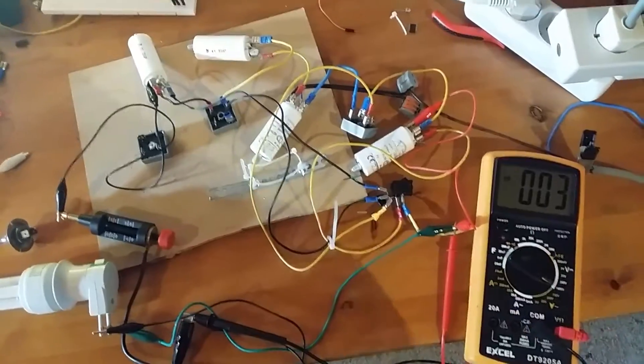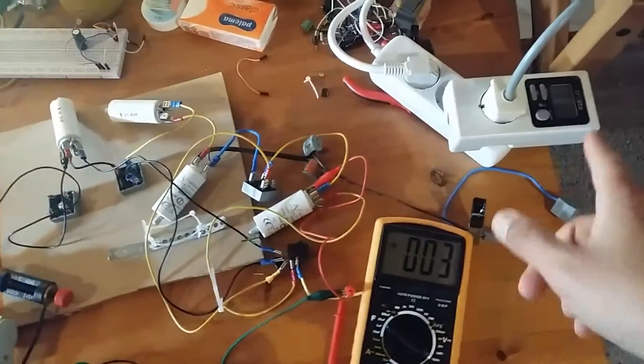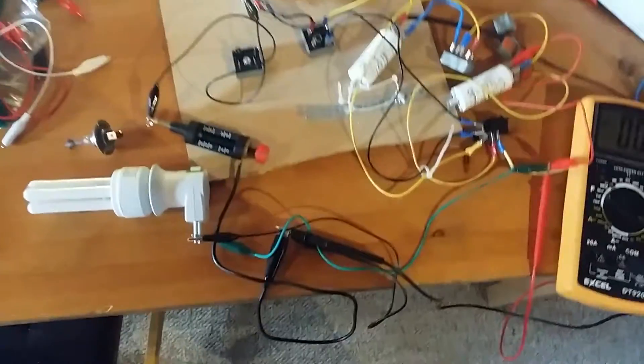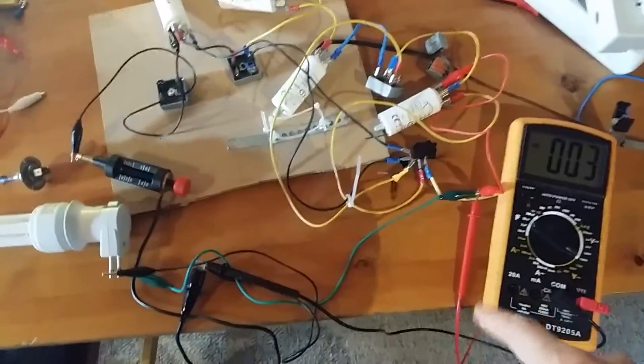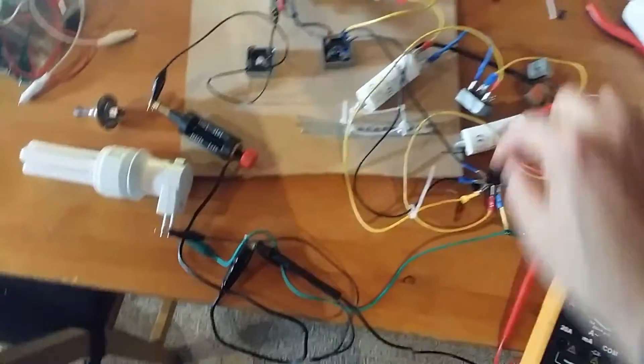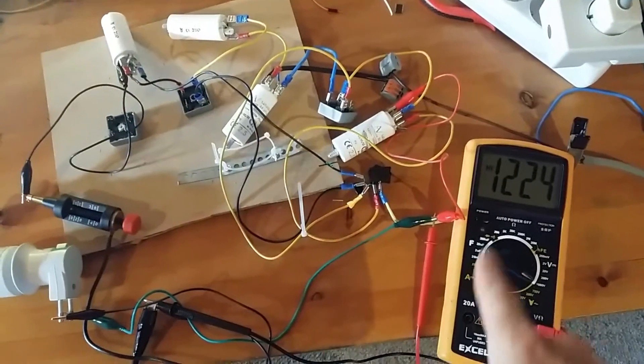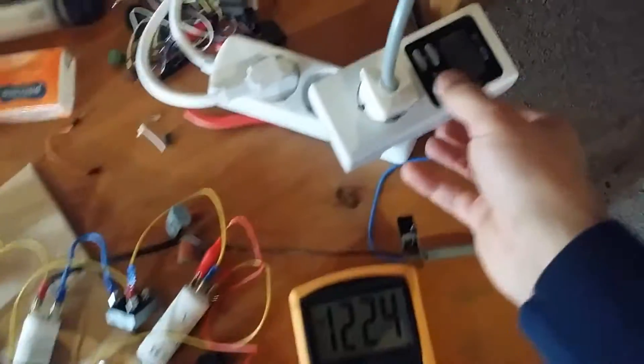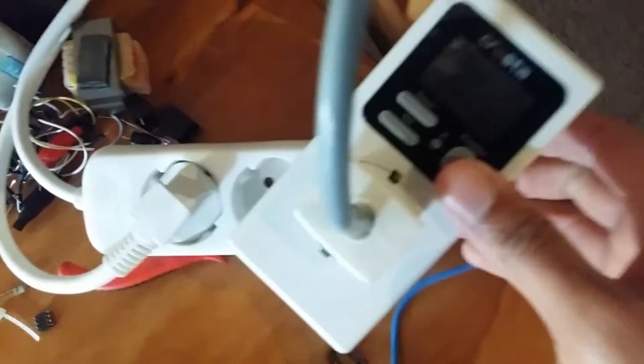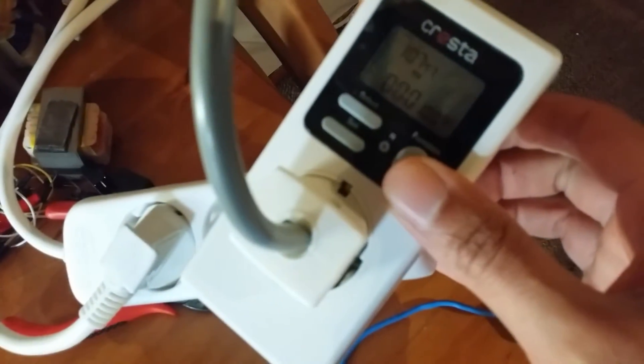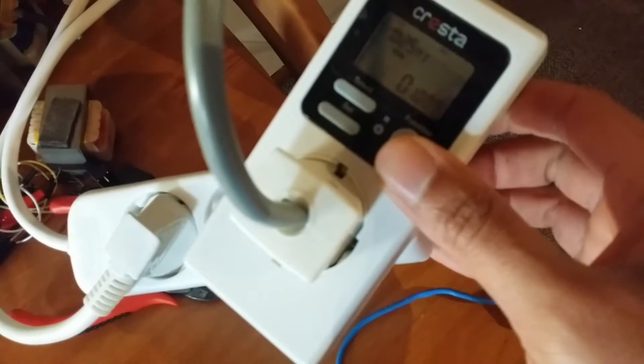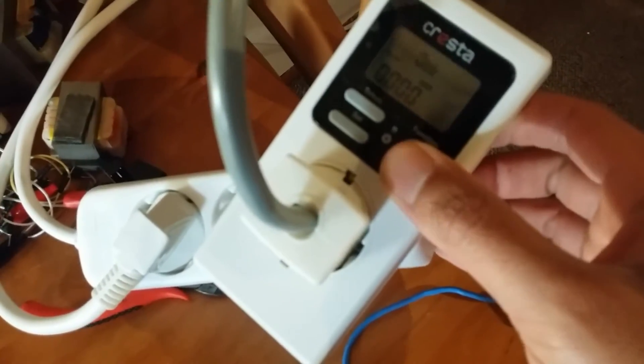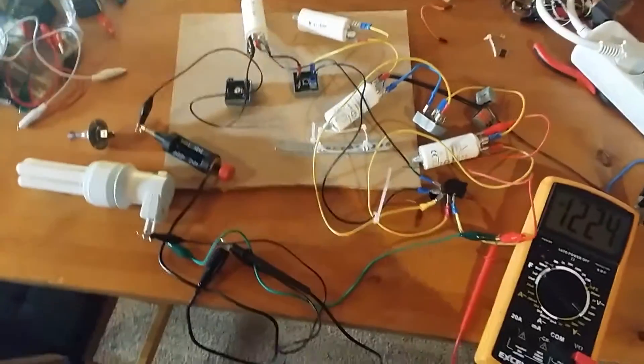We have a multimeter here and also a kilowatt meter. What we're going to show now is that when we turn on the system, we have 1200 volts, and there's nothing showing on the wattmeter. No load for the grid.